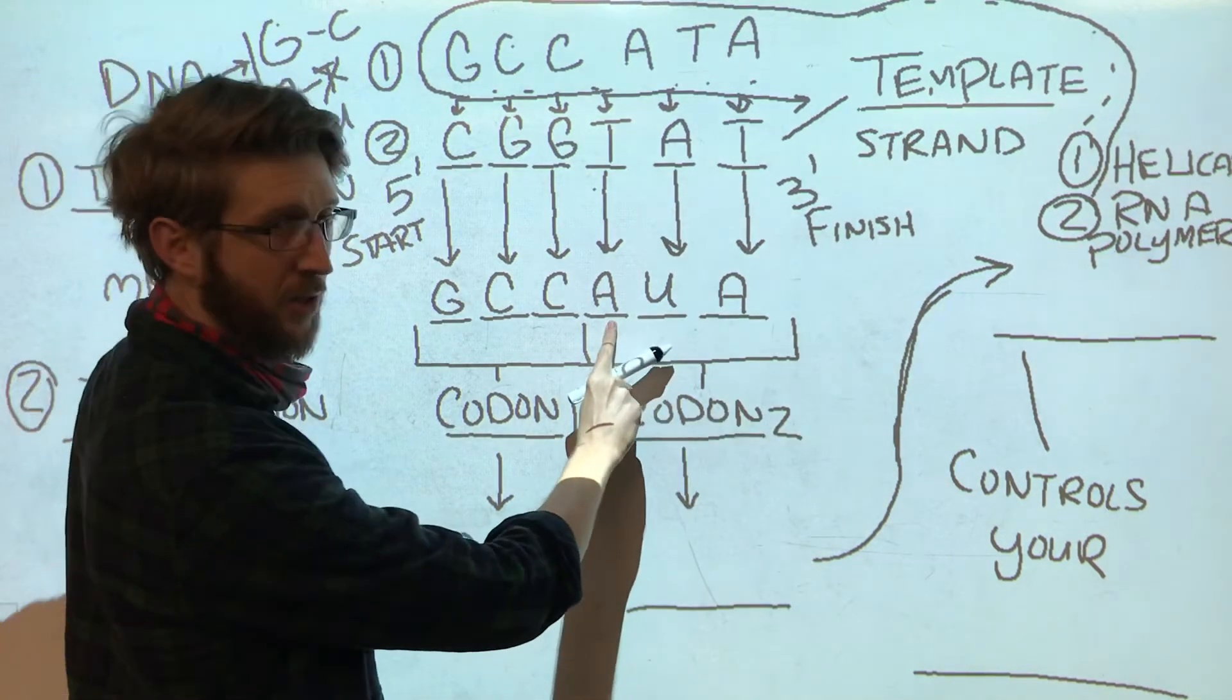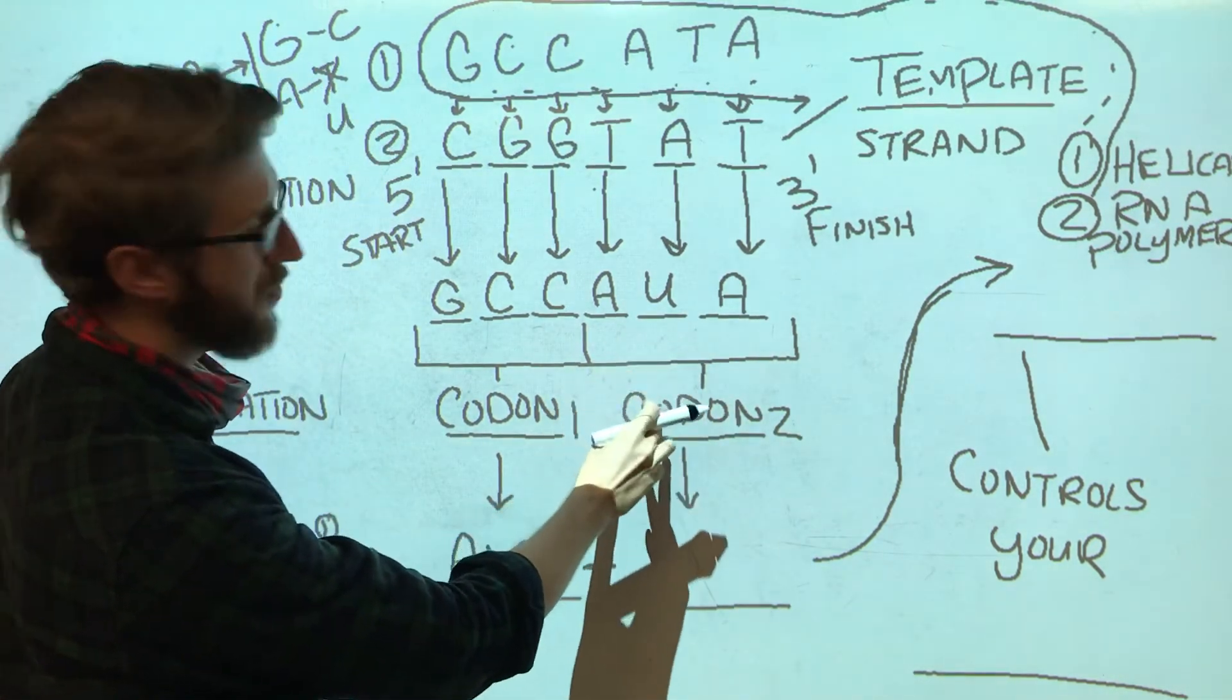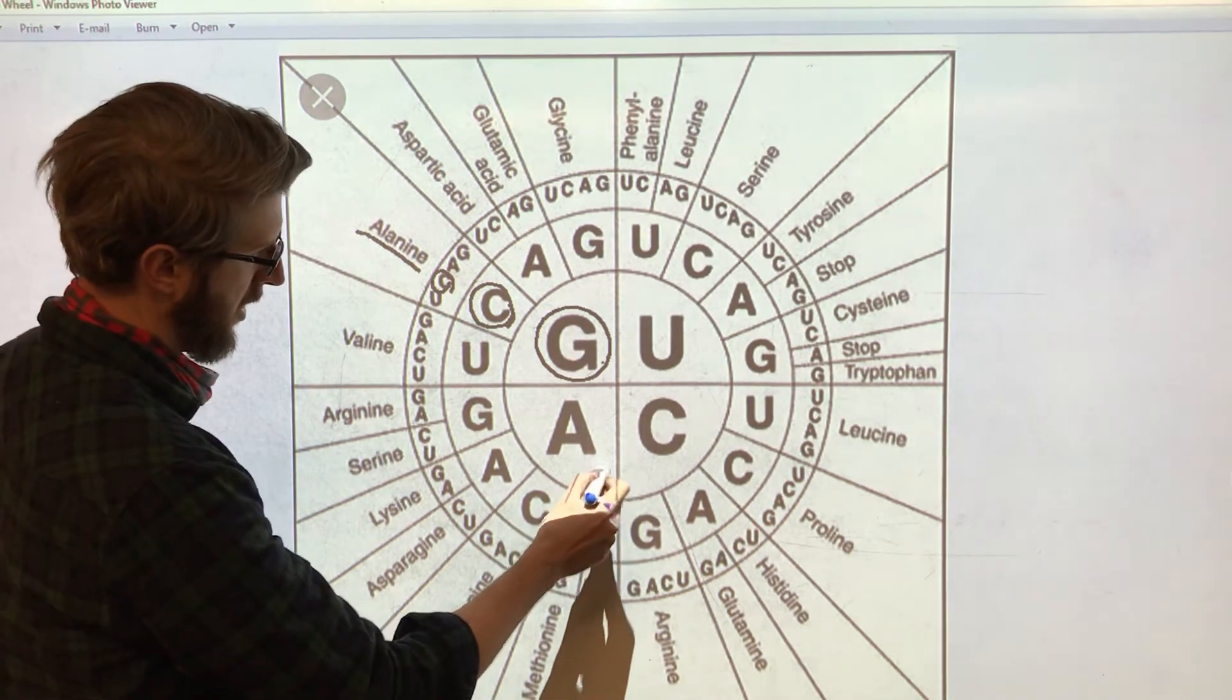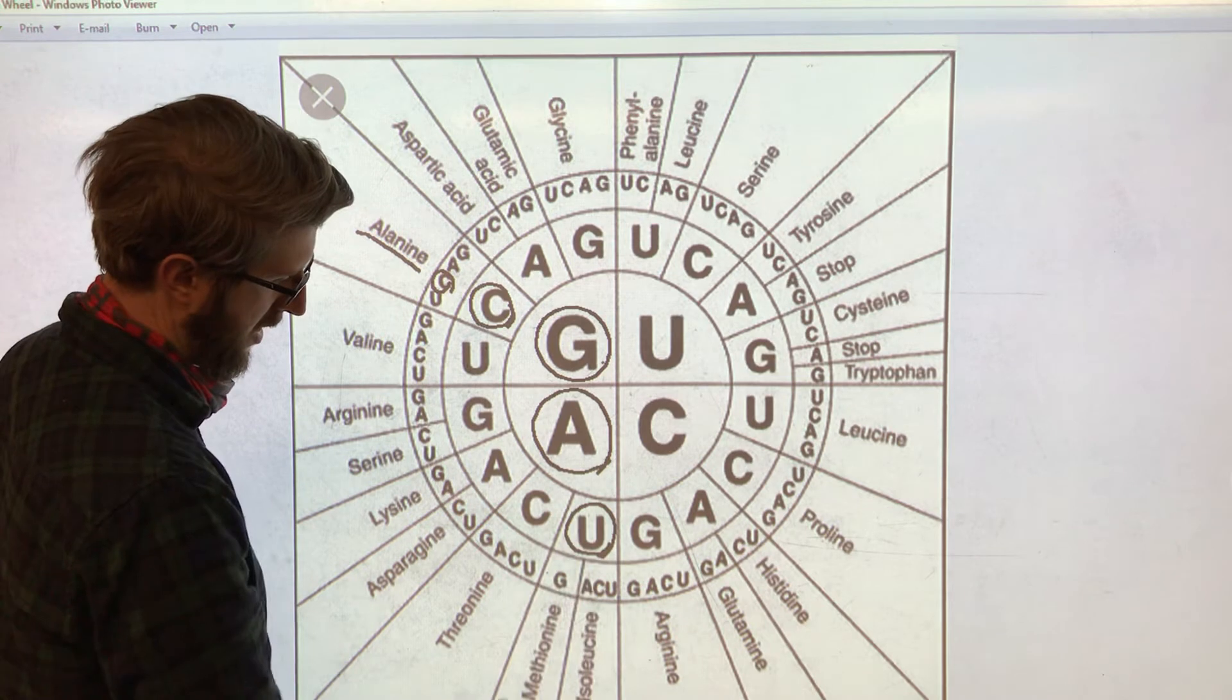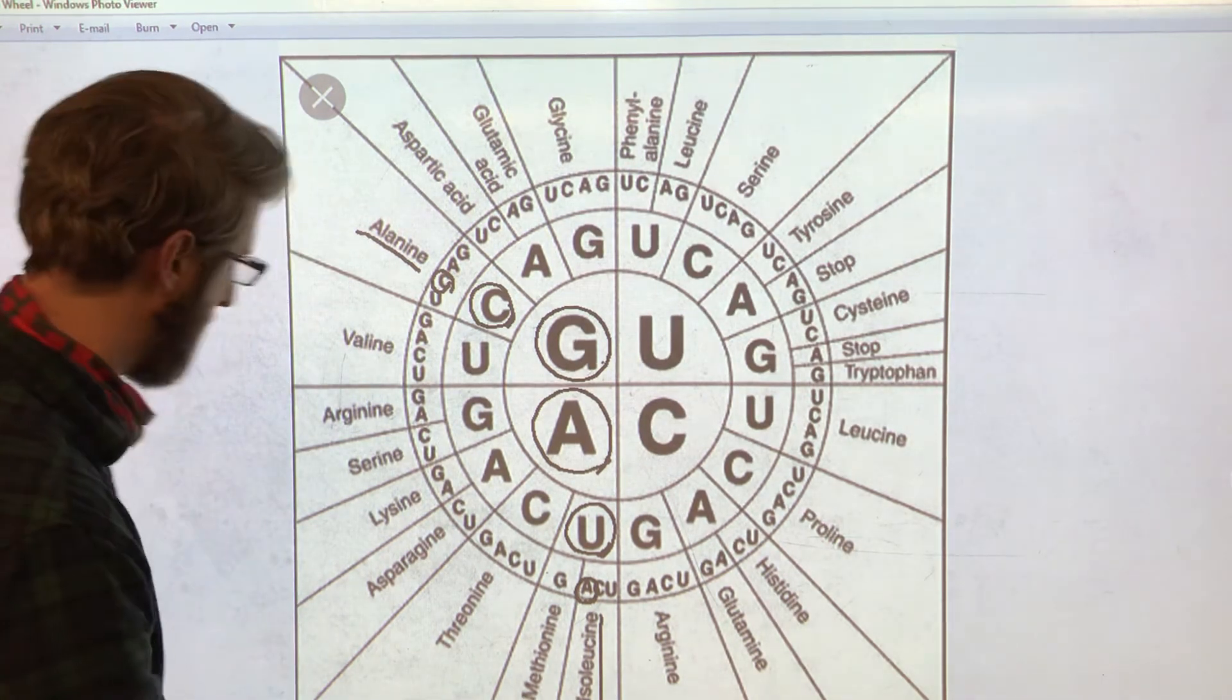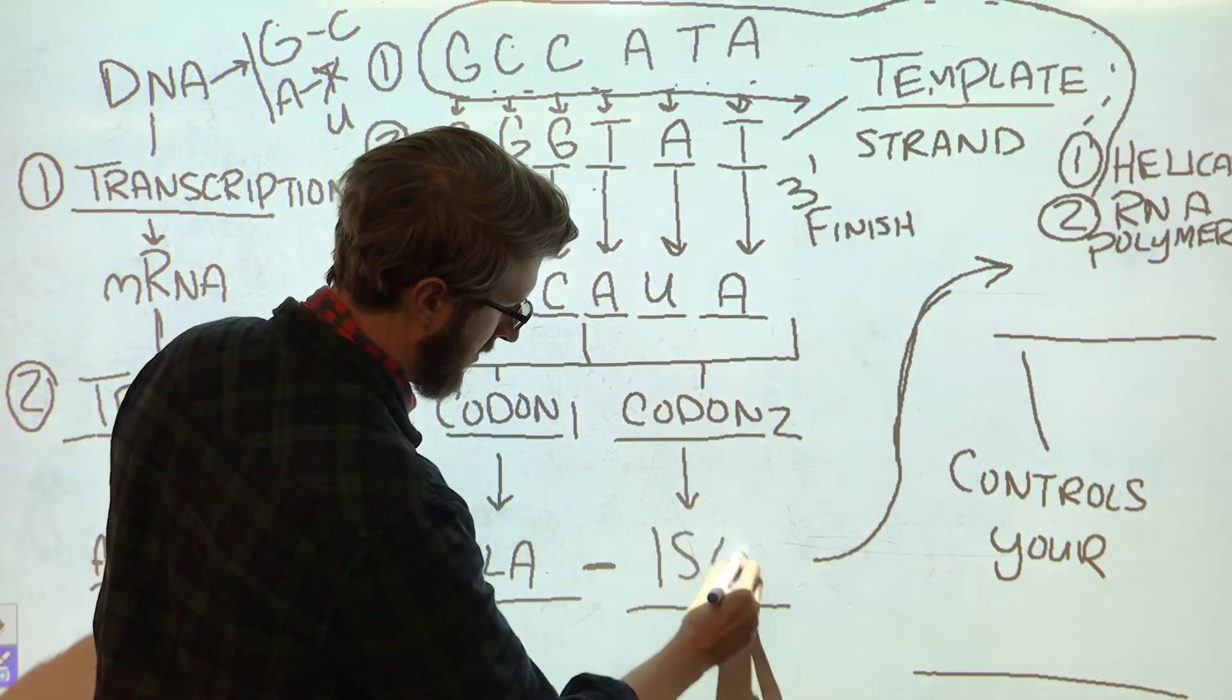The second codon, AUA, is going to tell us to make another amino acid. Let's find out which one. AUA. So we start in the middle, A, then we find the U, and then the A. And that tells us to make the amino acid isoleucine, or ISO for short.